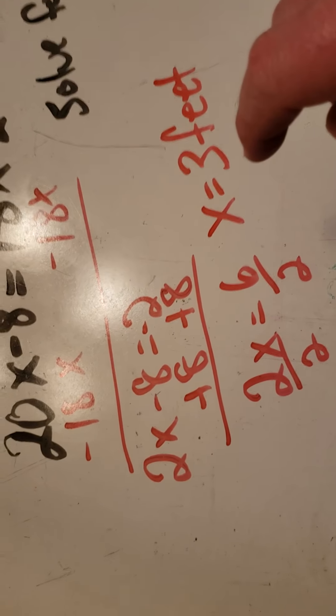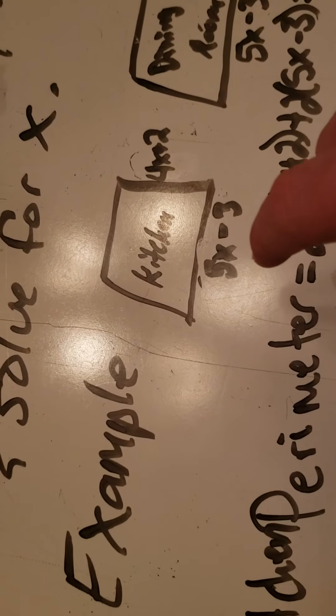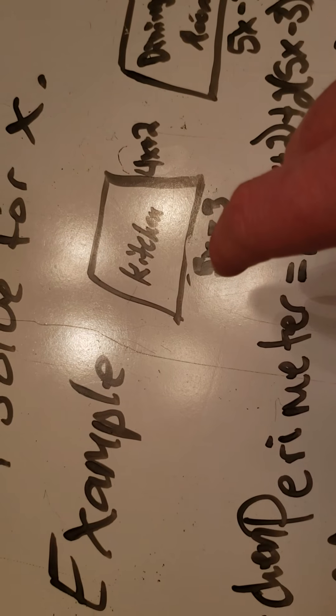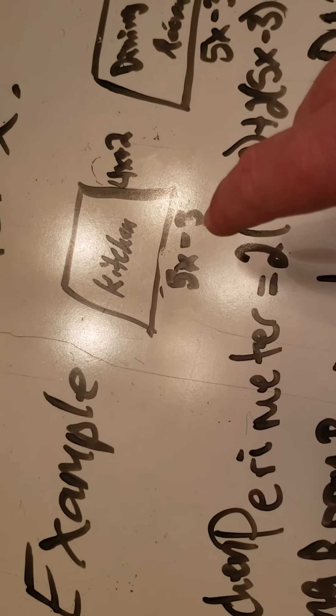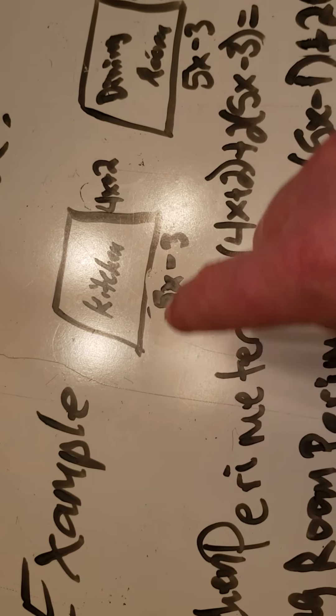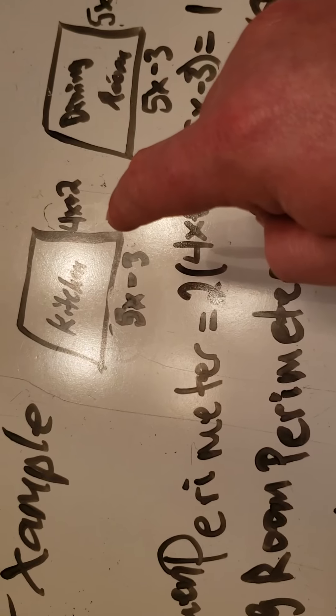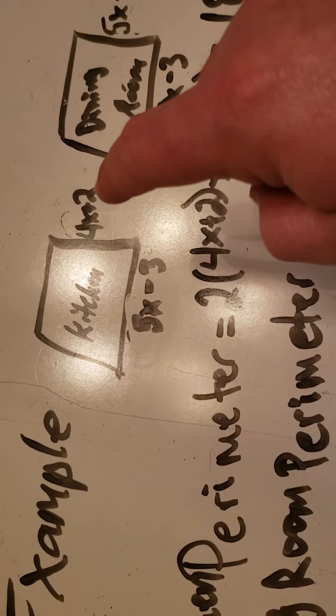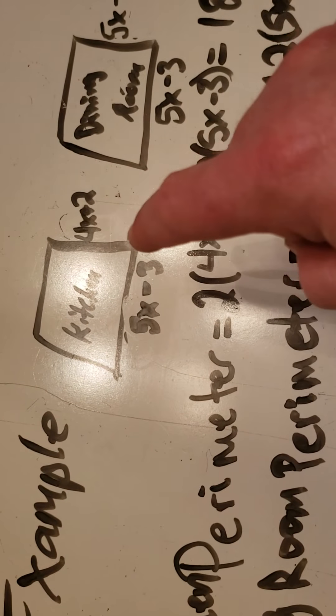You can now take that 3 and substitute it back in either here for x. So I would take 5 times 3, which is 15, minus 3, which is 12. So I would say my kitchen has a length of 12. Up here, it would be 4 times 3, which is 12, plus 2, which is 14, and a width of 14.